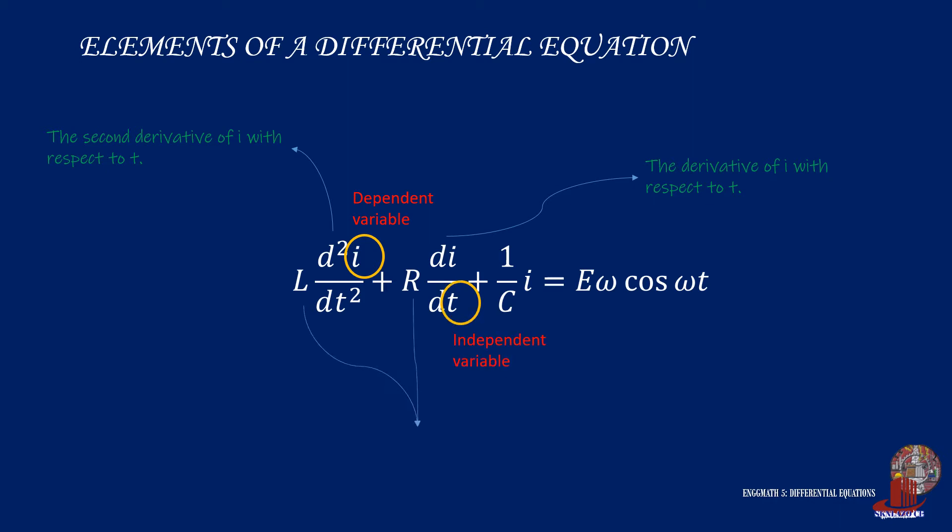The other elements in the formula such as L, R, C, e, and omega are called parameters.